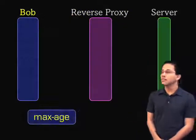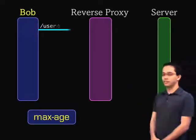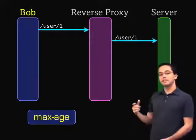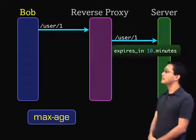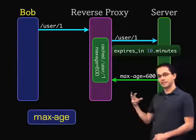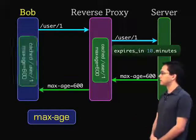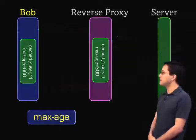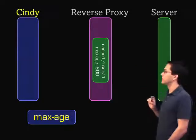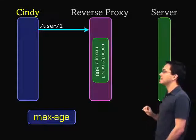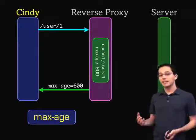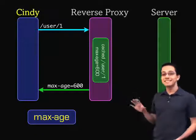The first way we can control our reverse proxy cache is by using the max-age header. Bob requests user slash one, the request passes through our proxy server to our Rails server. On this Rails action we've got expires_in 10 minutes, so it sends back max-age equals 600 to our reverse proxy, which caches that request. If Bob revisits within 10 minutes, it loads from his local browser cache. But here's where it gets cool — if Cindy, a different user, requests the same path within 10 minutes, it simply serves what's cached in the reverse proxy. For the next 10 minutes, our Rails server is never hit.